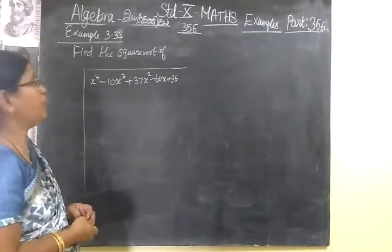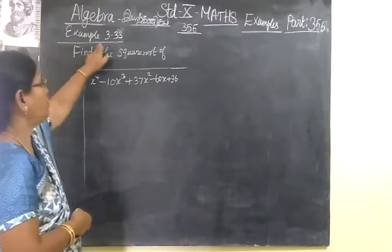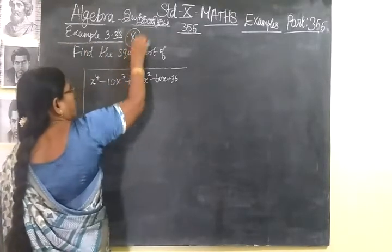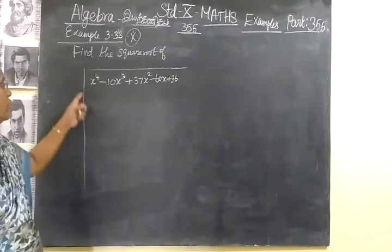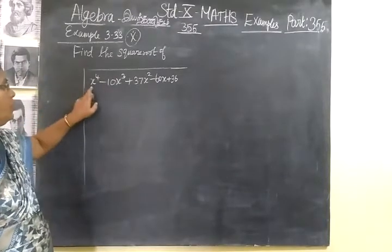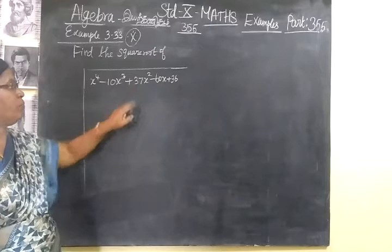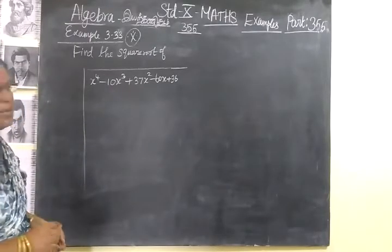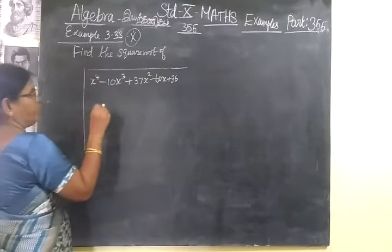Now we see part 355, exam 3.33. This is a very important question. Find the square root of x⁴ - 10x³ + 37x² - 60x + 36. This is a very easy question only.